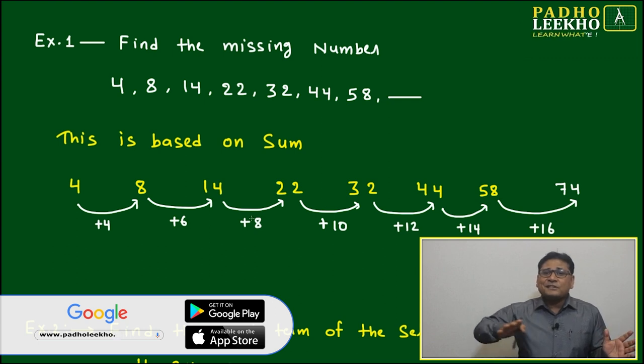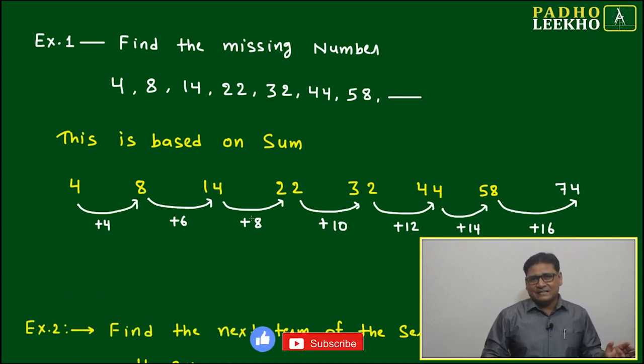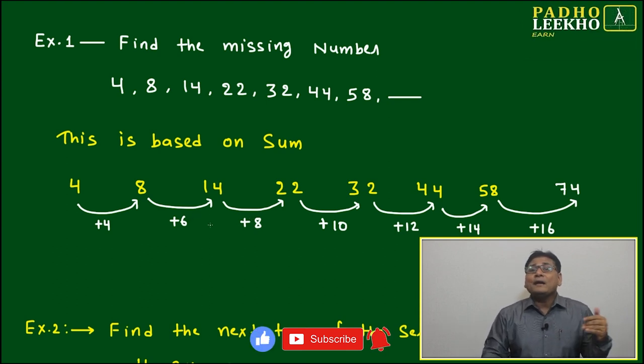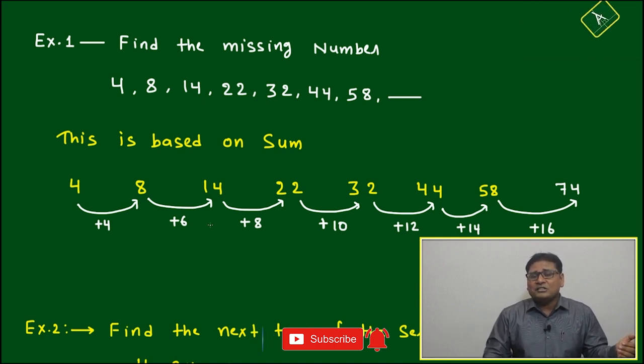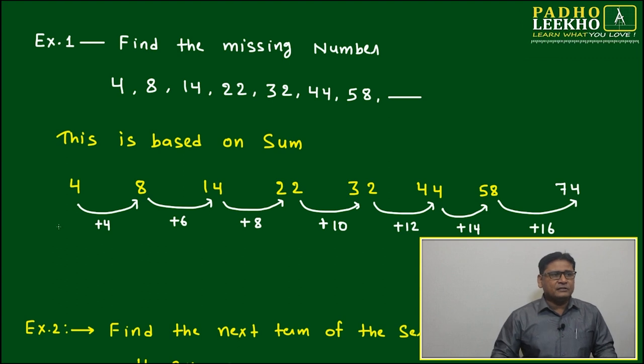Addition between two consecutive numbers or consecutive terms may not be fixed or constant. It may follow some arithmetic progression, and the same thing is happening here.